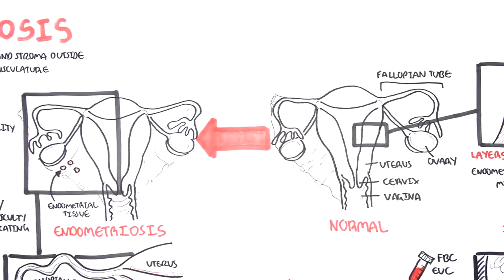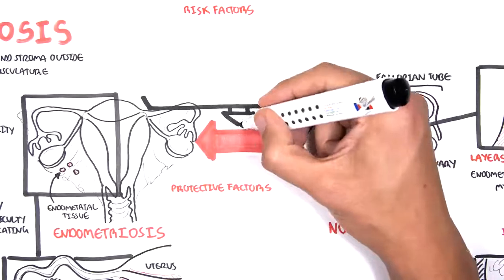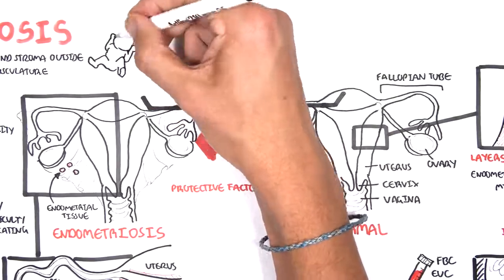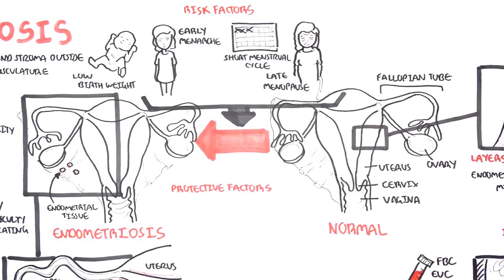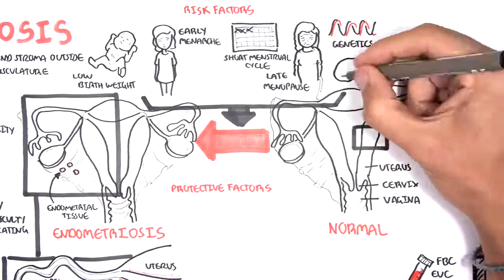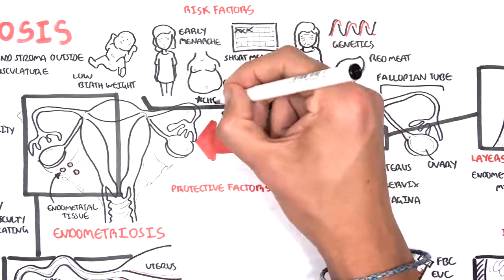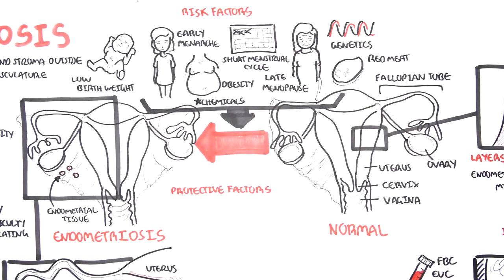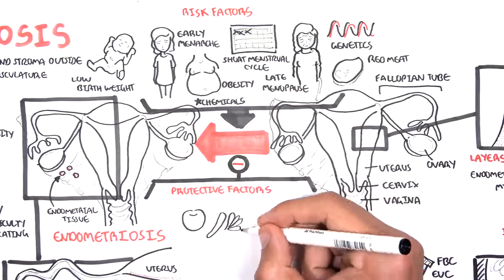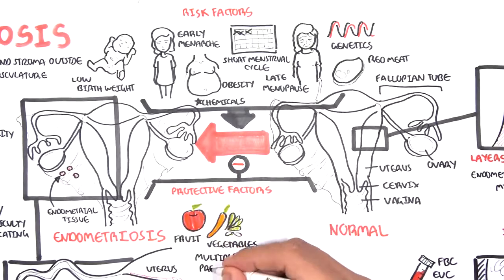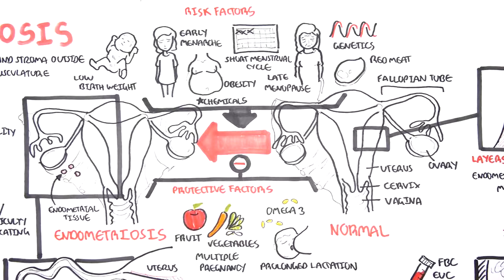Although the exact mechanism of endometriosis is unknown, some known risk factors include low birth weight, early menarche, short menstrual cycle, late menopause, certain genetics, eating large amounts of red meat, obesity, and certain chemicals. Protective factors include fruits, vegetables, multiple pregnancies, omega-3 oil, and prolonged breastfeeding and lactation.